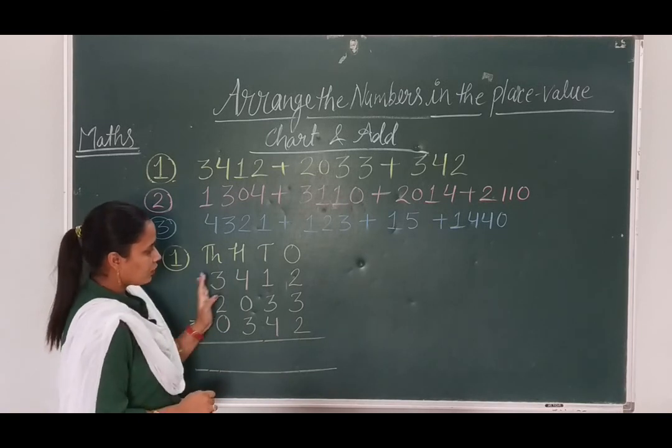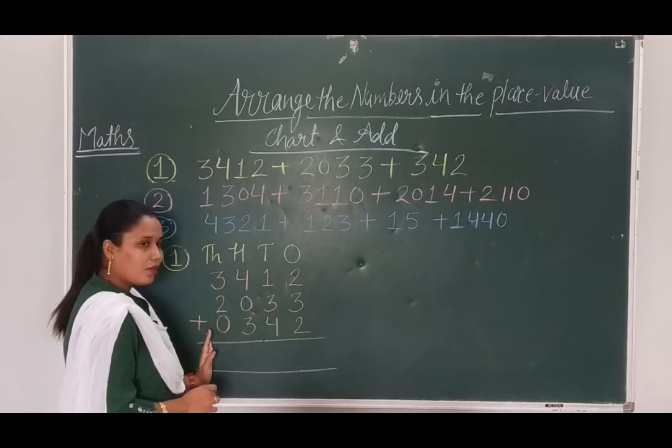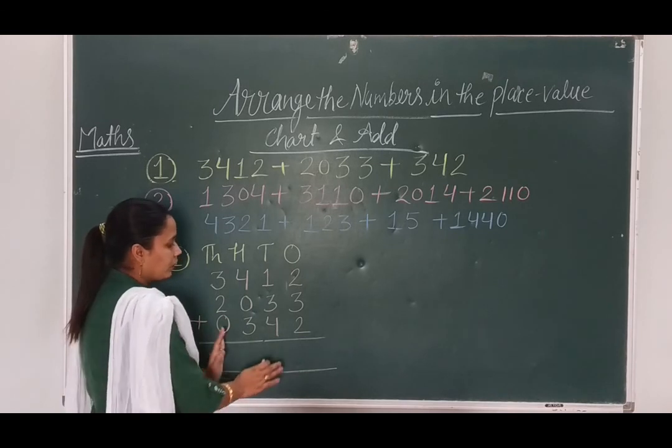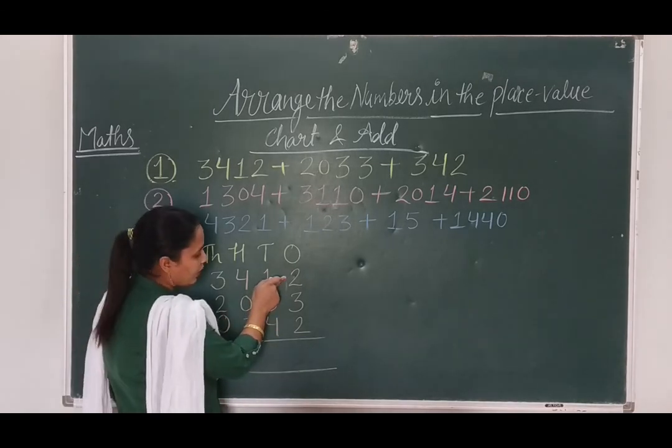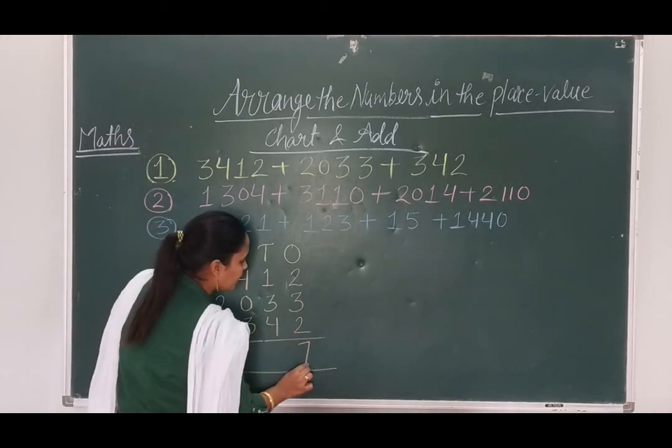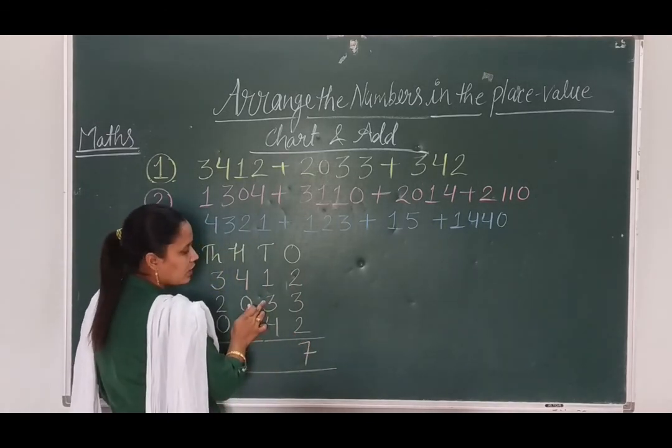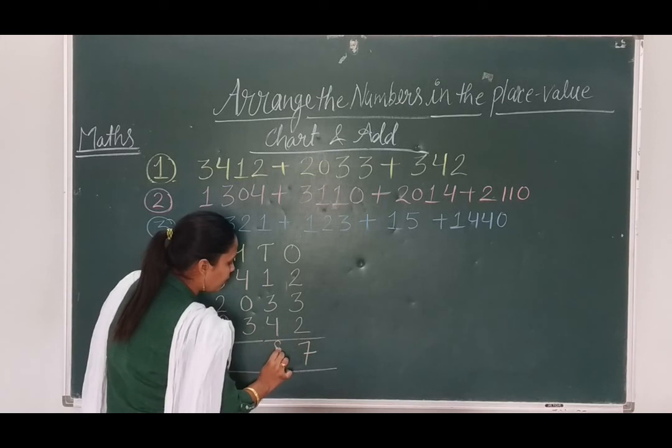Now, first, we have written place value. Then we have written all the digits. Then we have to add next. Now, 2 plus 3, 5, 5 plus 2, 7. 1 plus 7, 8. 3 plus 4, 7. 7 plus 1, 8.